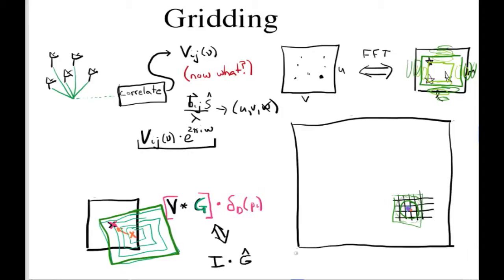And some of the favored ones today in synthesis imaging are spheroidal gridding functions, which are often called in the literature and in the world of digital signal processing as Kaiser, two-dimensional Kaiser windows, K-A-I-S-E-R. And these themselves are a family of gridding functions that you can look at.